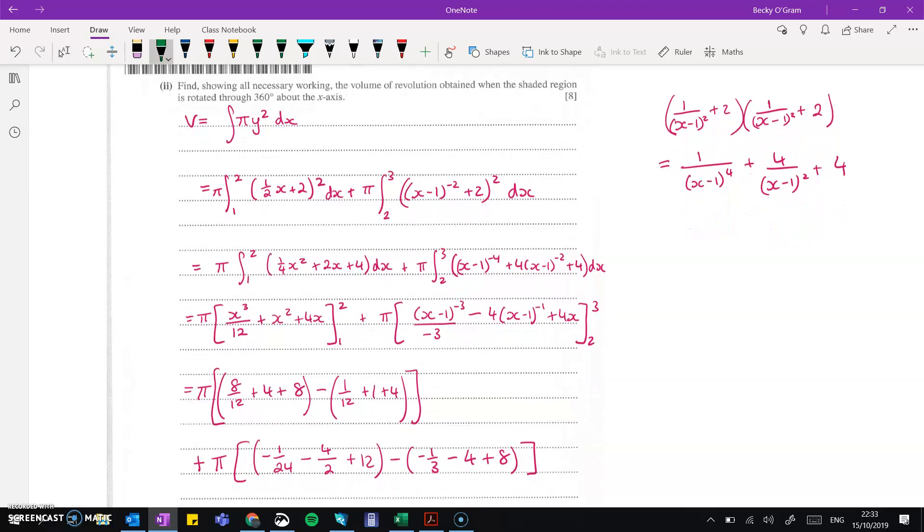So volume of revolution is to integrate pi y squared. So if we put in y for the first part, and y for the second part, and then continue that integration through, there's quite a lot of spaces to make mistakes here, so you have to be very careful.